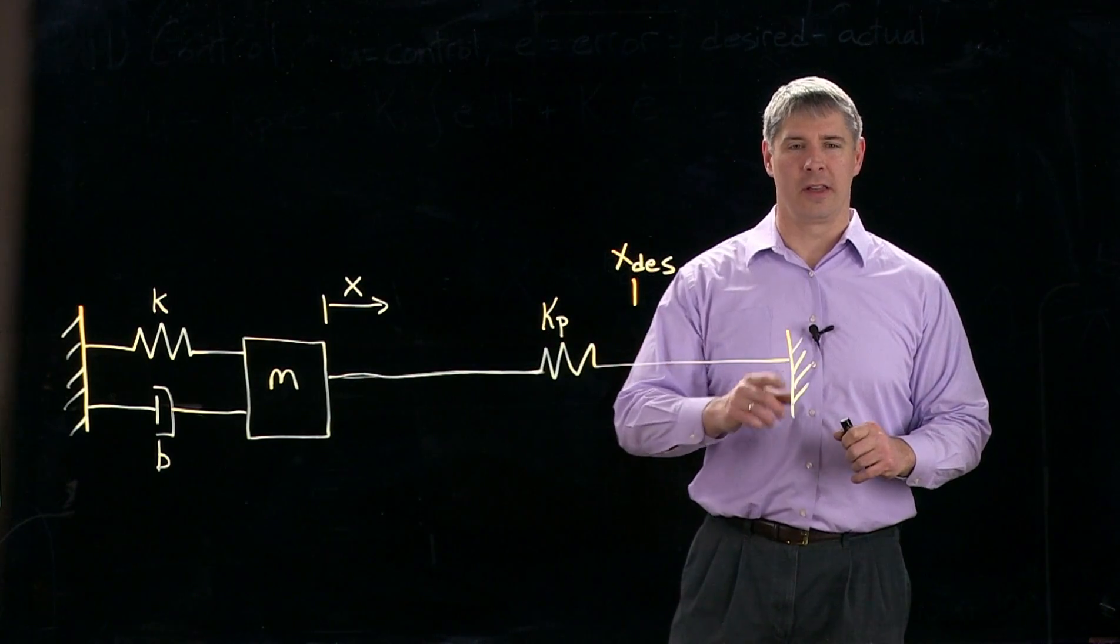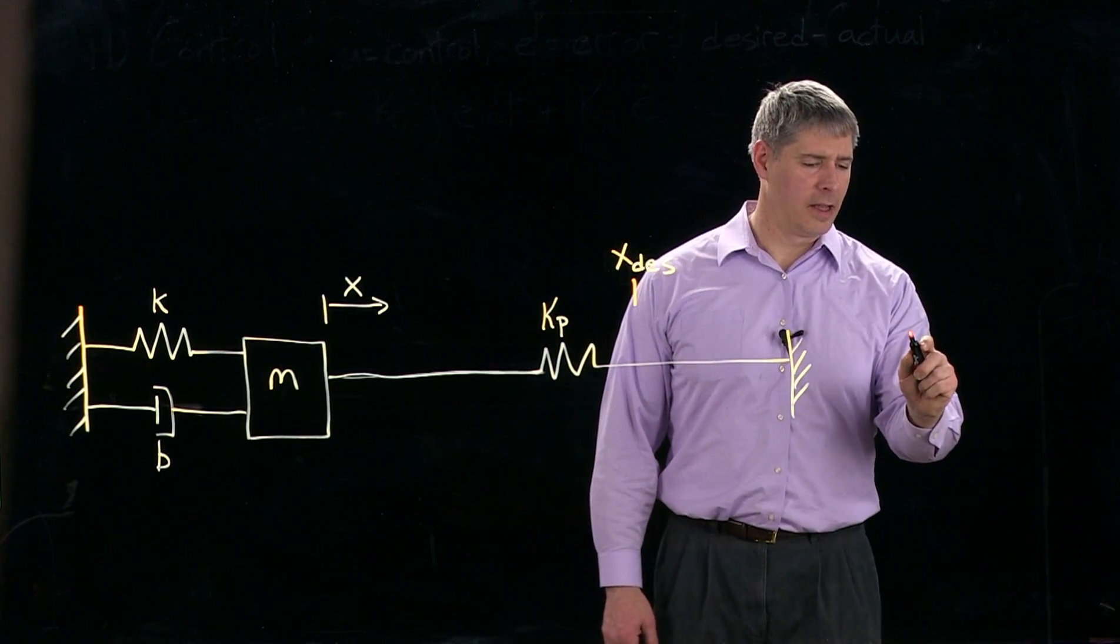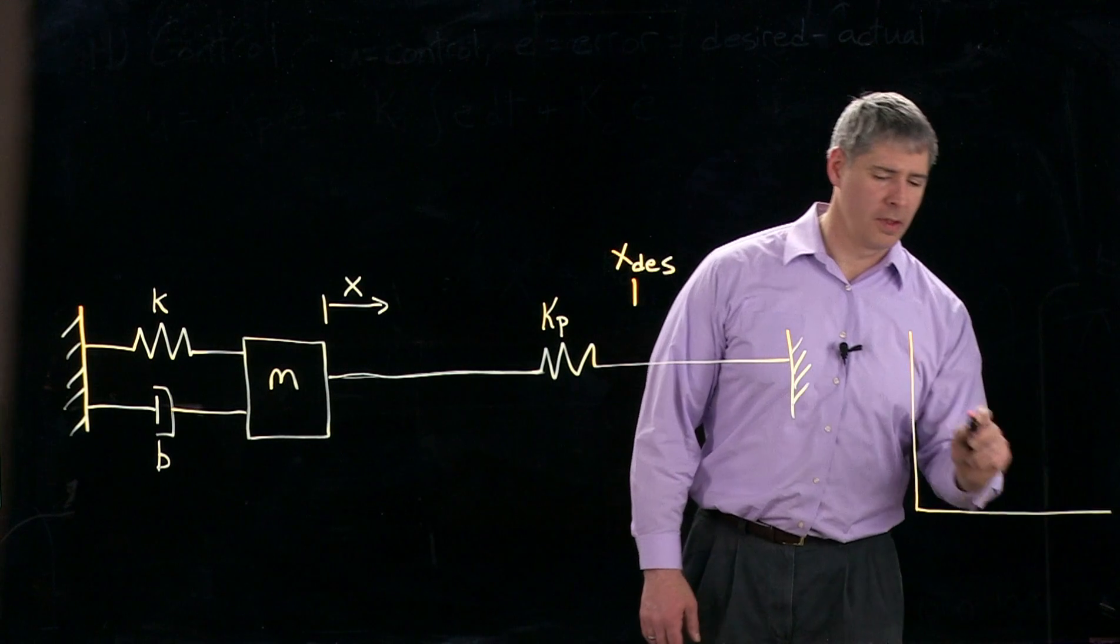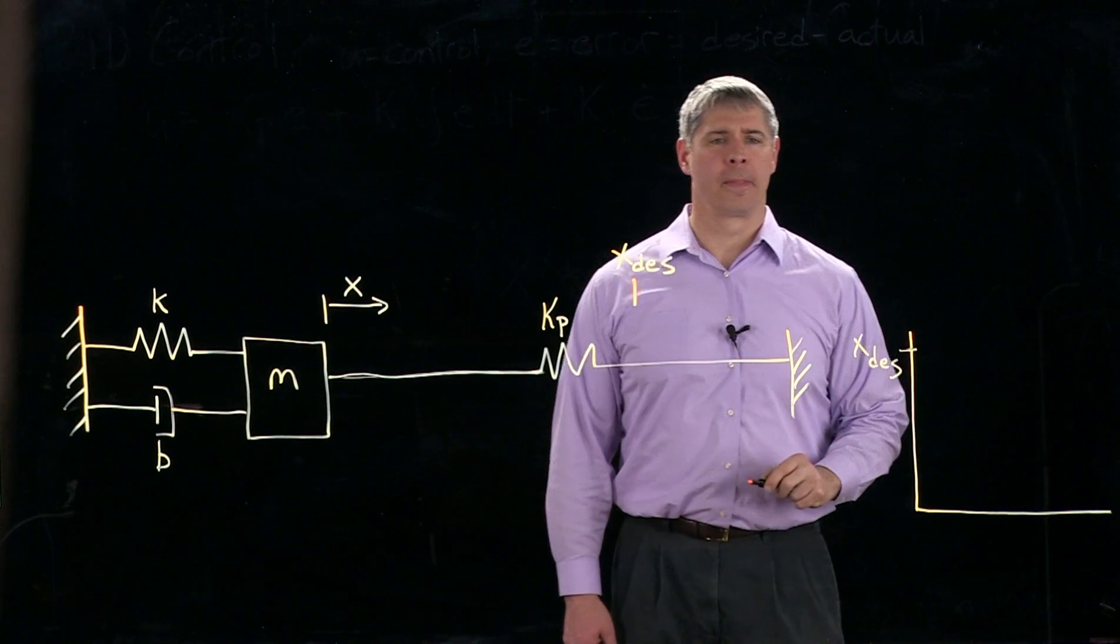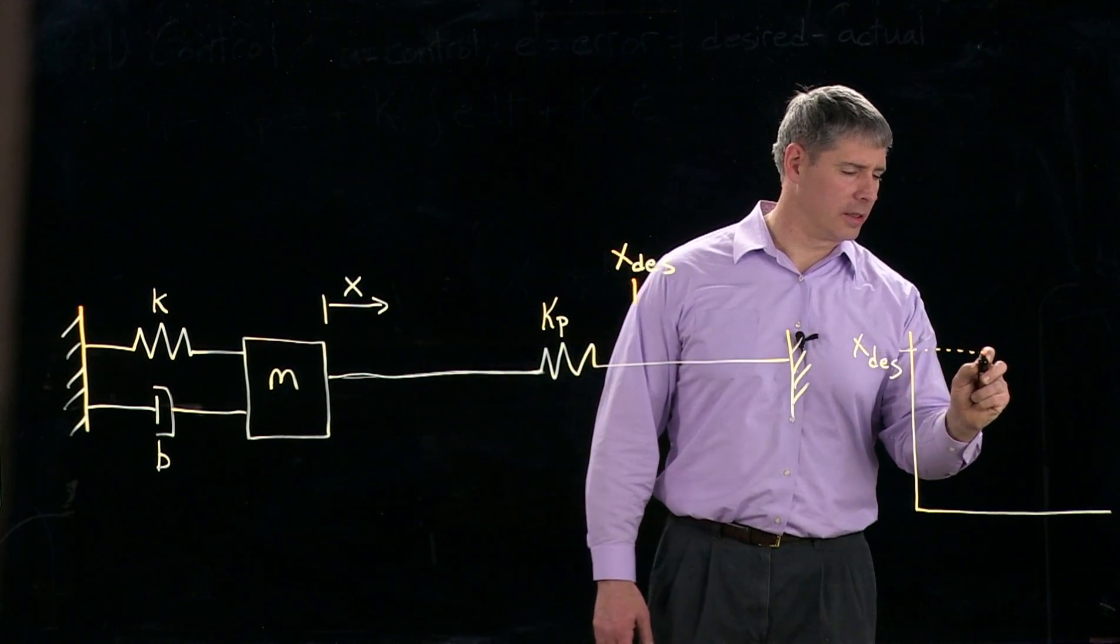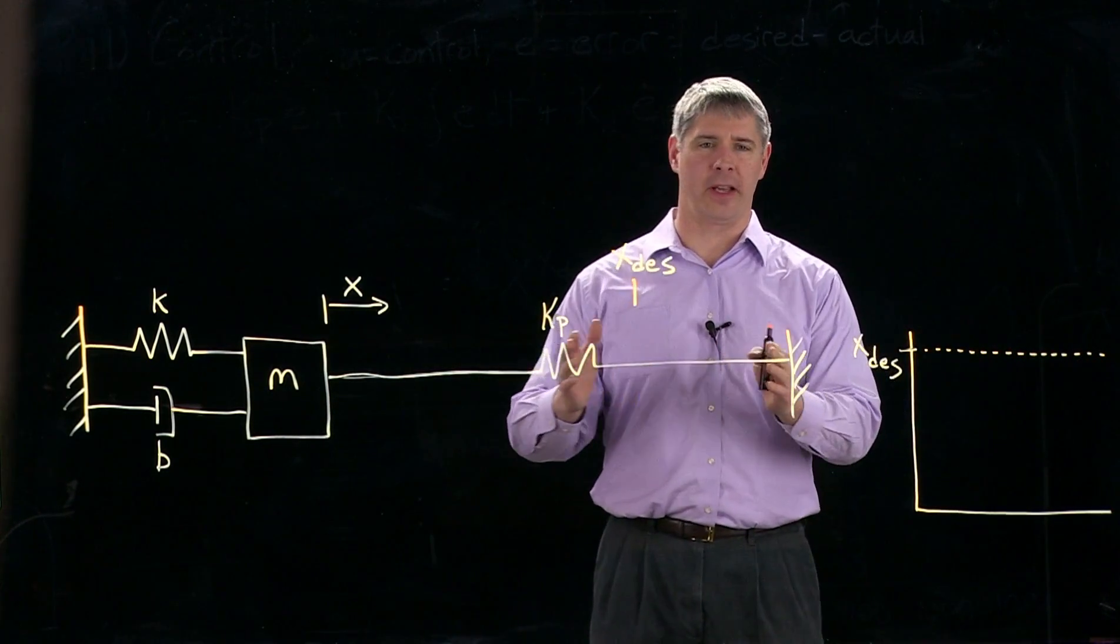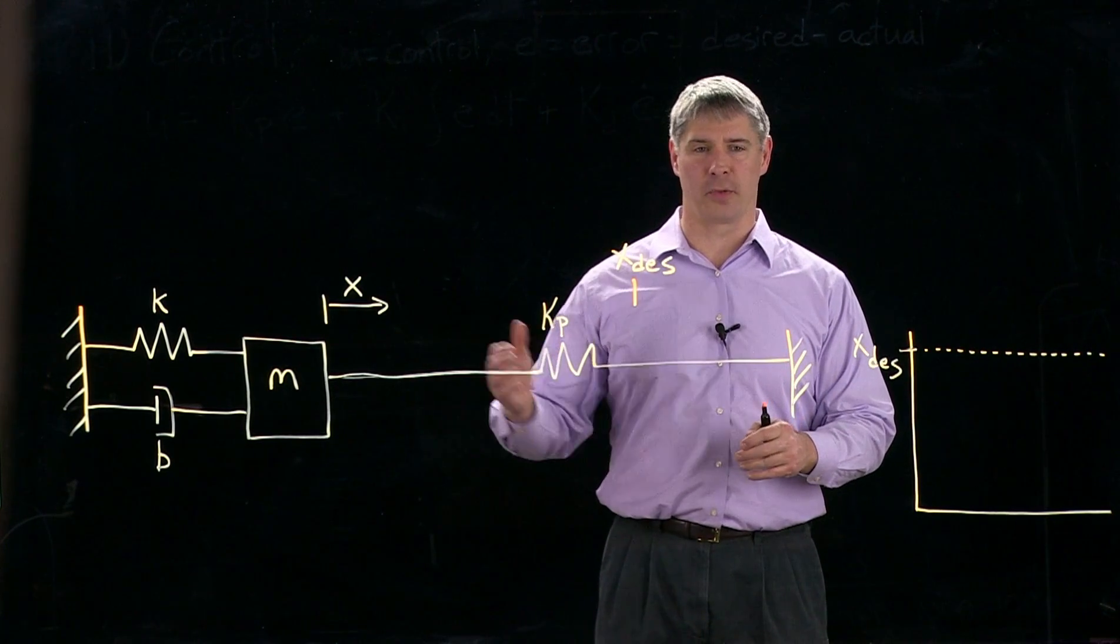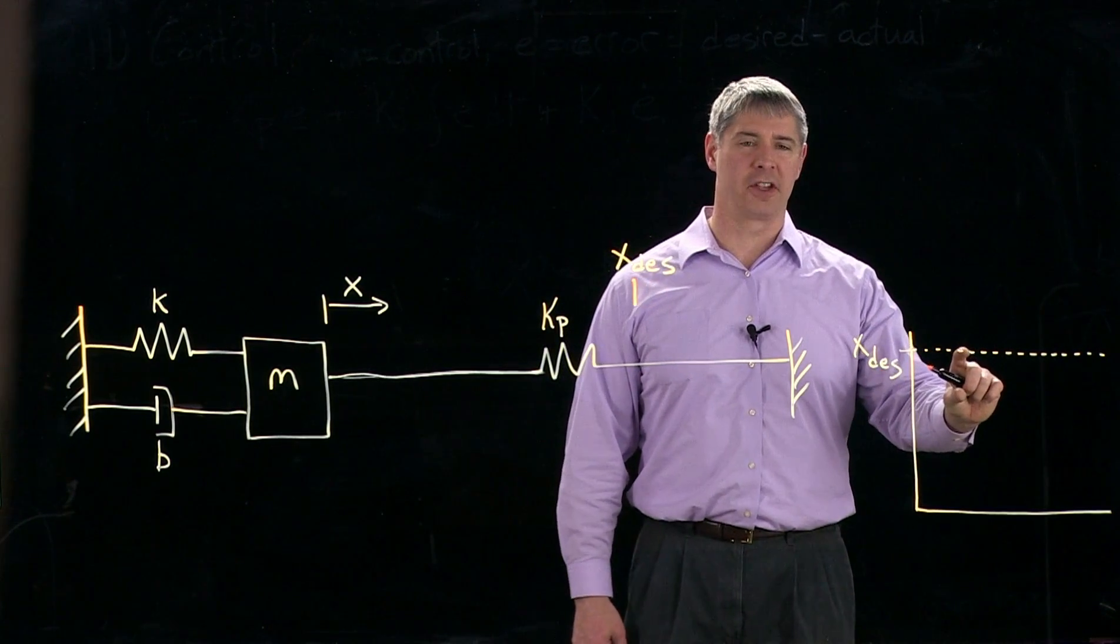And that's the pulling force that this spring provides. So if we plot that position of the mass as a function of time, we want it to reach X desired. So let me draw a dotted line there. So the spring is going to pull the mass, but remember the spring has to be extended a little bit beyond its rest length, or else it won't apply any force in this direction. So that means we're going to have to have some error here.